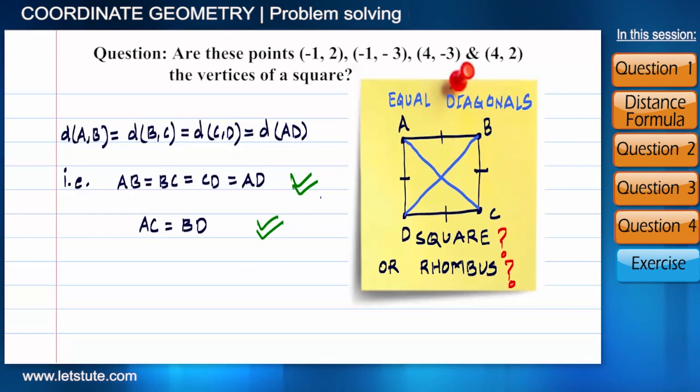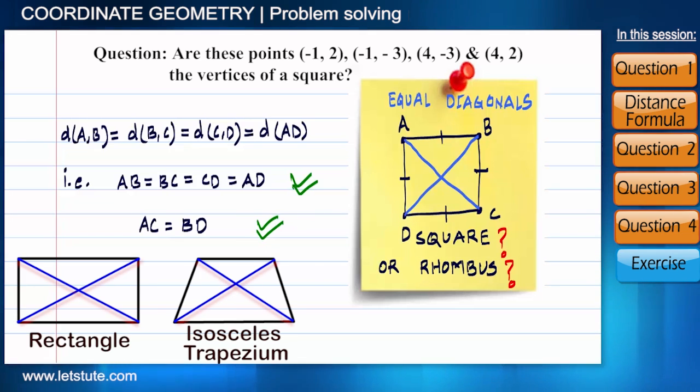You must be thinking, if we directly find AC and BD, the lengths of the diagonals, is it enough to check for a square? The answer is no, because even rectangles and isosceles trapeziums also have equal diagonals.